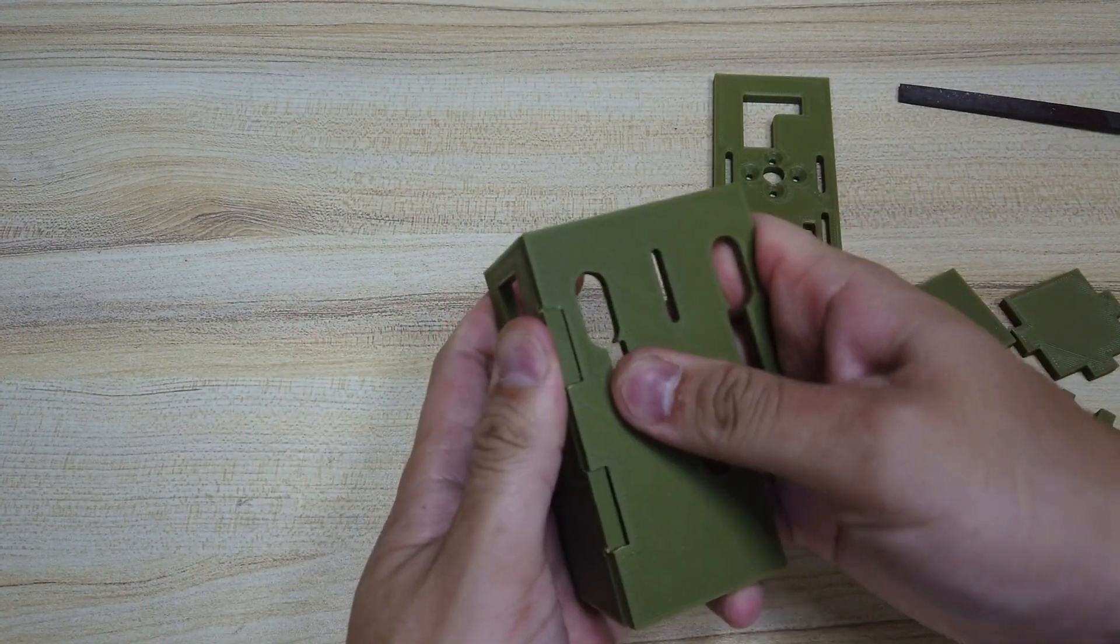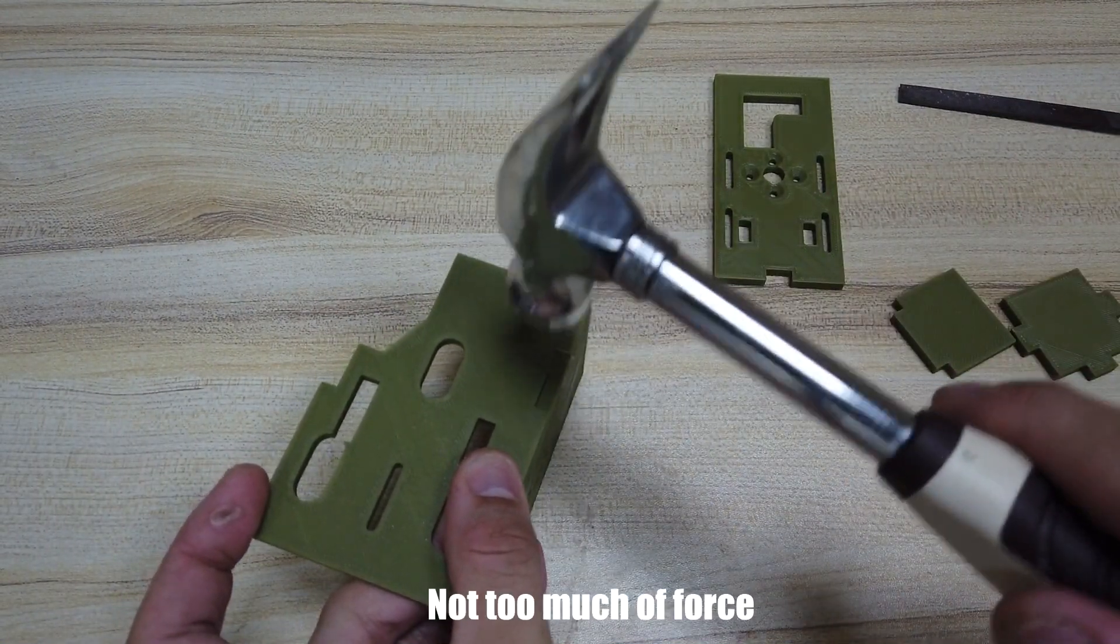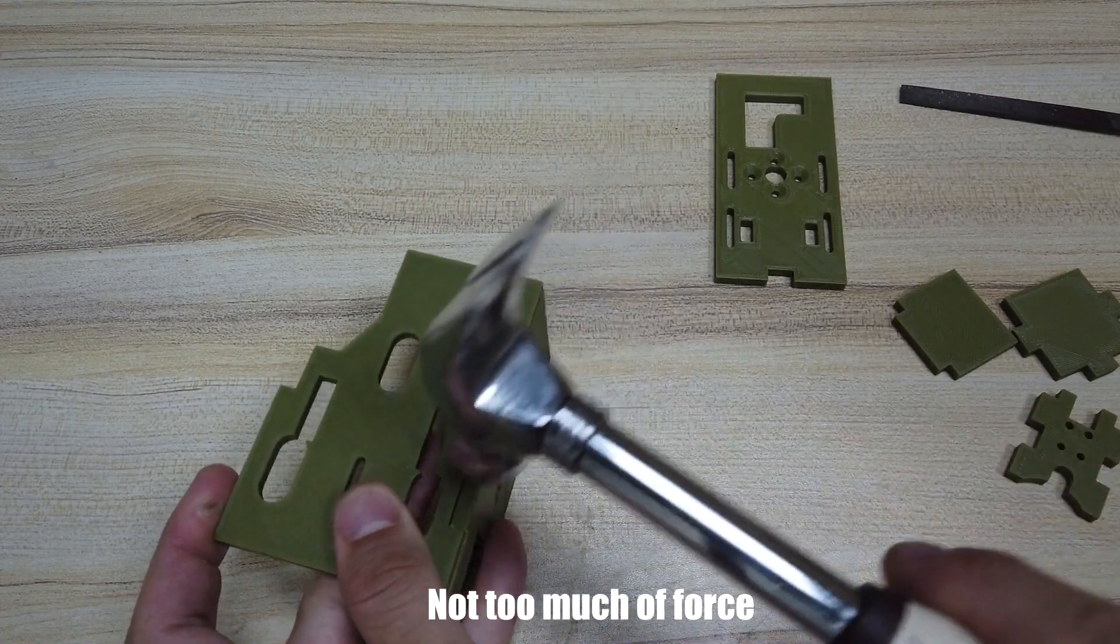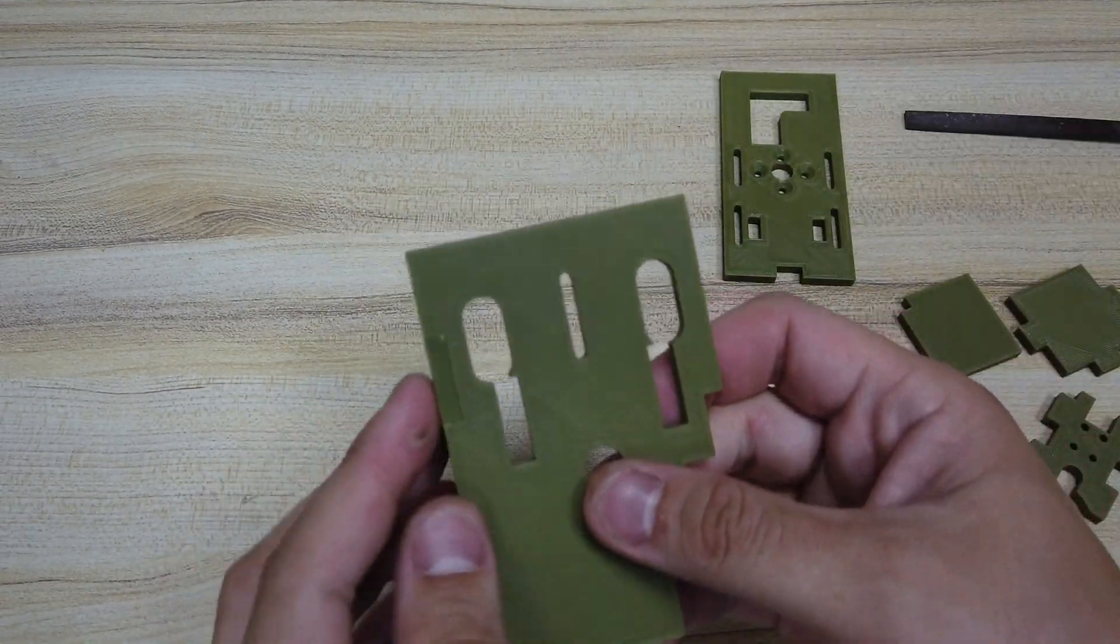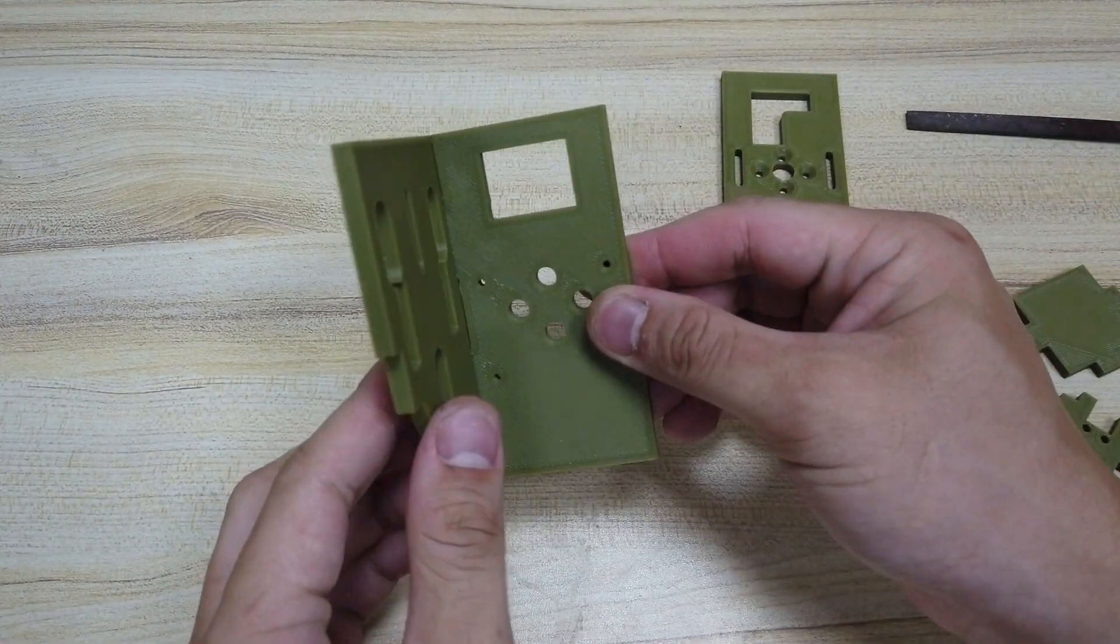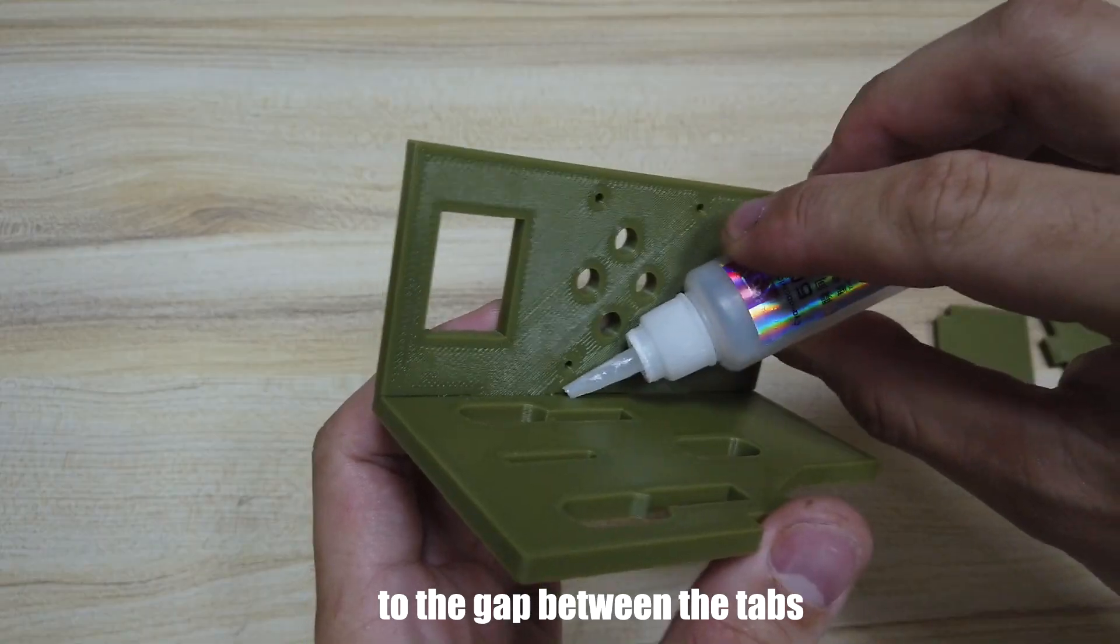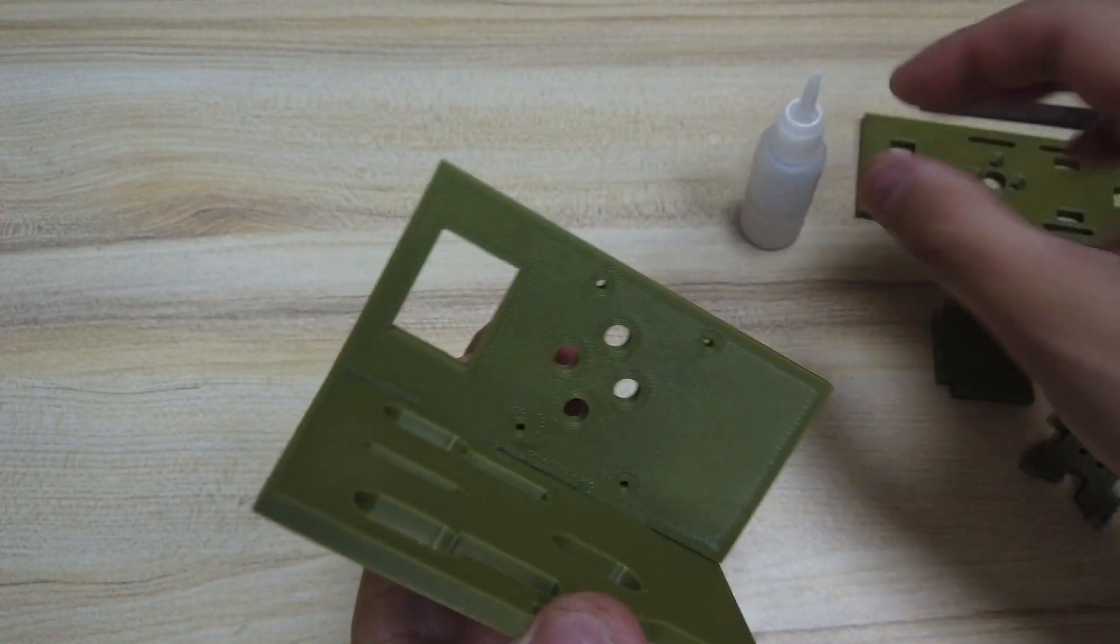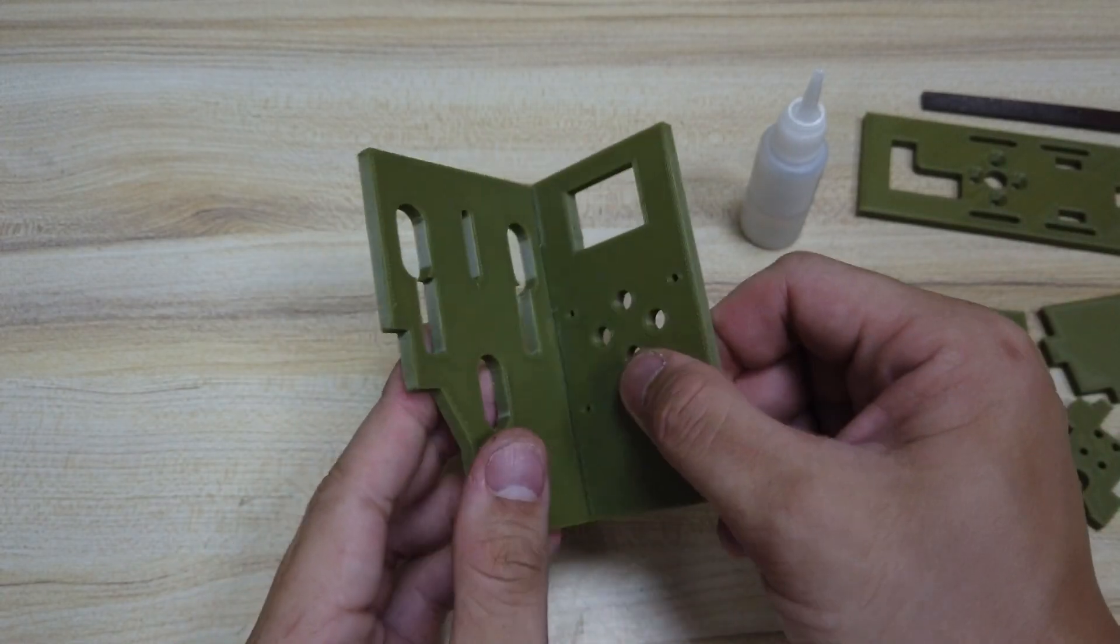Now I can fit it in. If you have a hammer, you can knock it to make it tighter. As you can see, the gap is quite close already now. Check that it's 90 degrees. Apply super glue. You just need the glue to drip into the slit for it to hold strongly together.